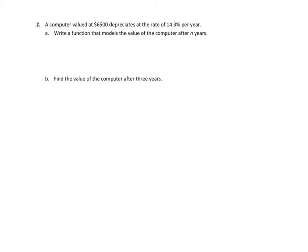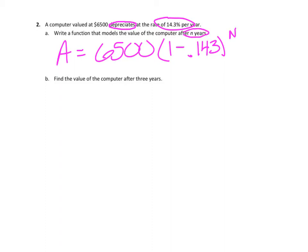Question 2. A computer valued at $6,500 depreciates at the rate of 14.3% per year. Part A, write a function that models the value of the computer after N years. Depreciates means that it's losing value, so we know it's decaying. Let's start with our formula: A equals the initial amount, $6,500. We know it's going to be 1 minus the rate. That's a percentage, so the rate is 0.143 raised to the N. Then typically we clean this up. So we'll say that amount equals 6500 times 0.857 raised to the N.